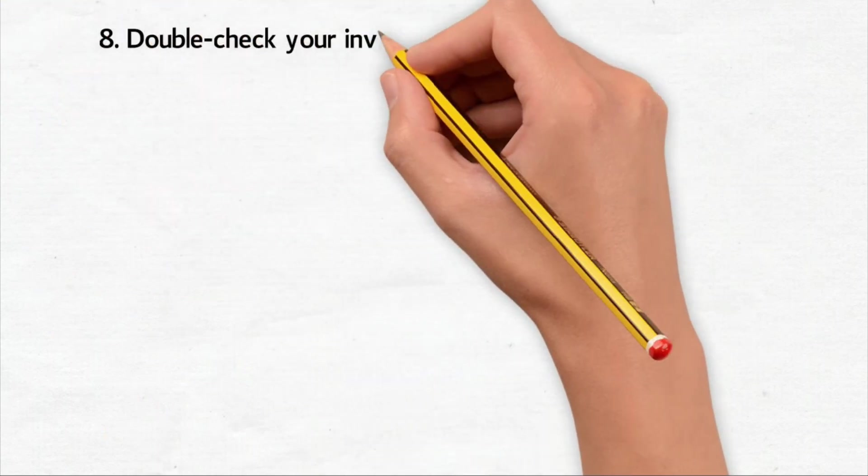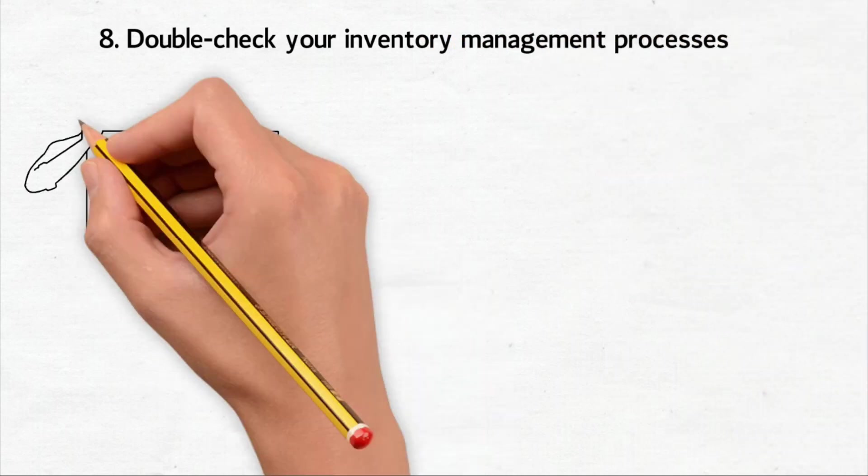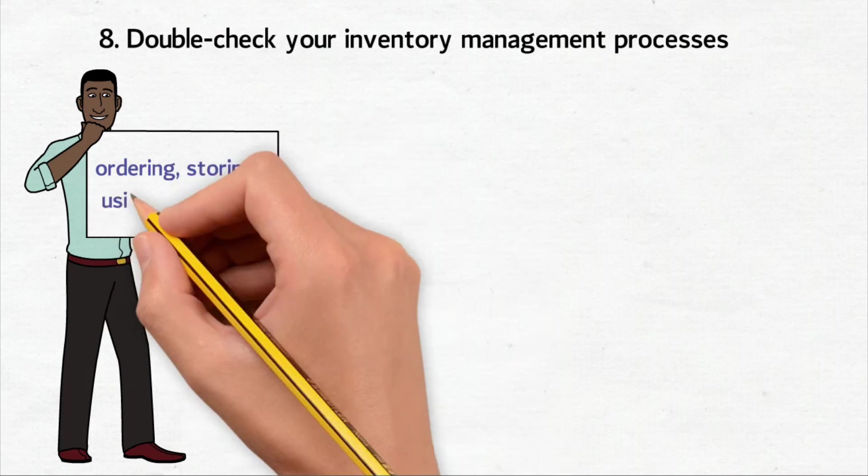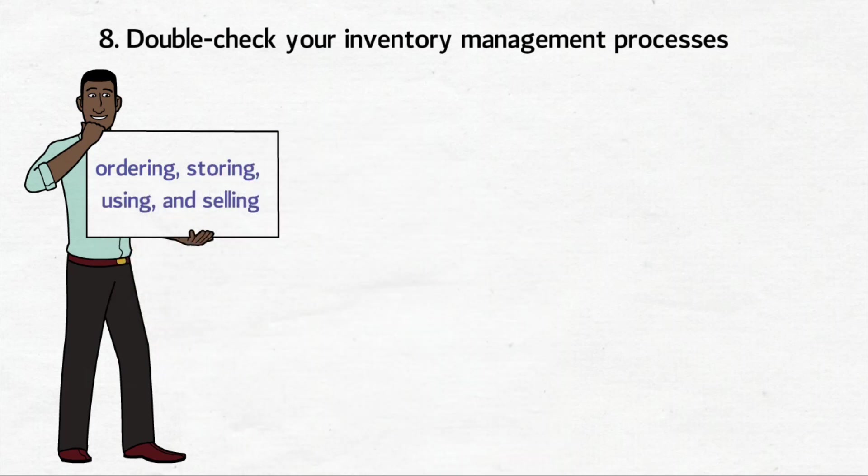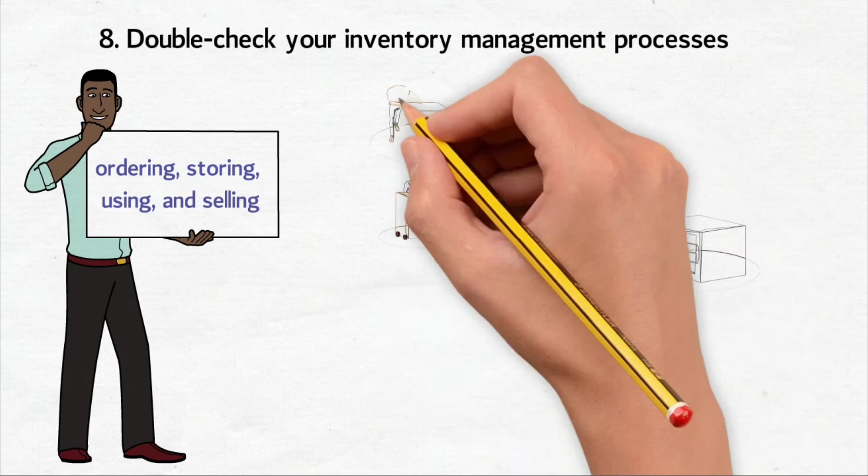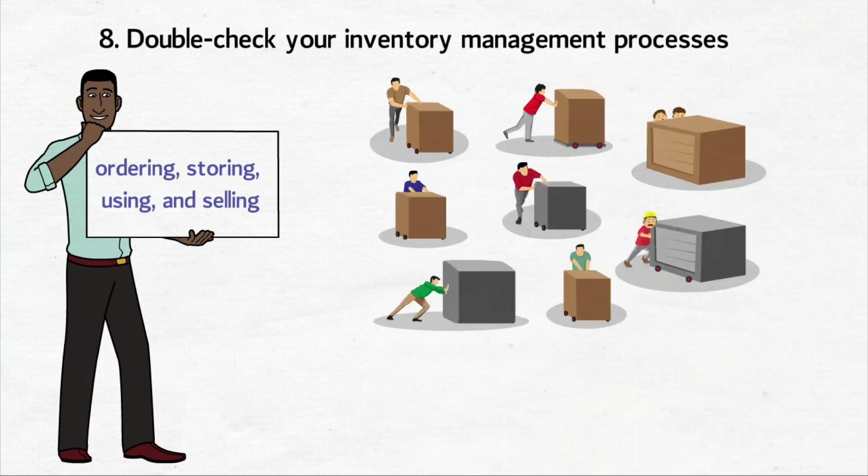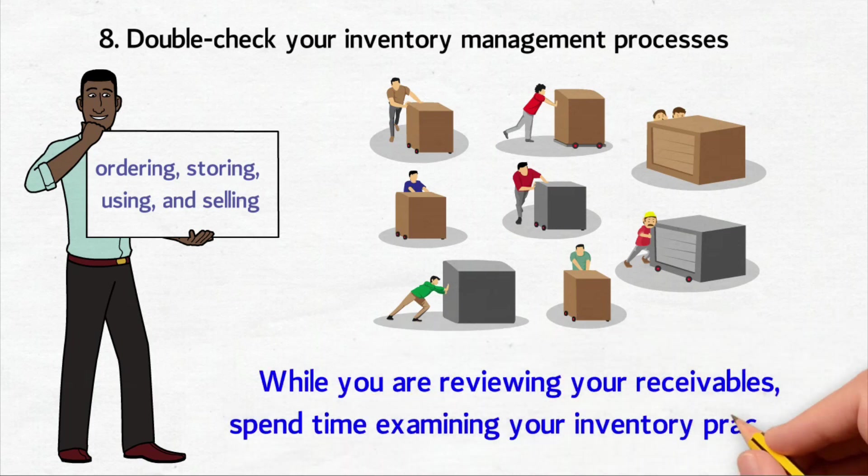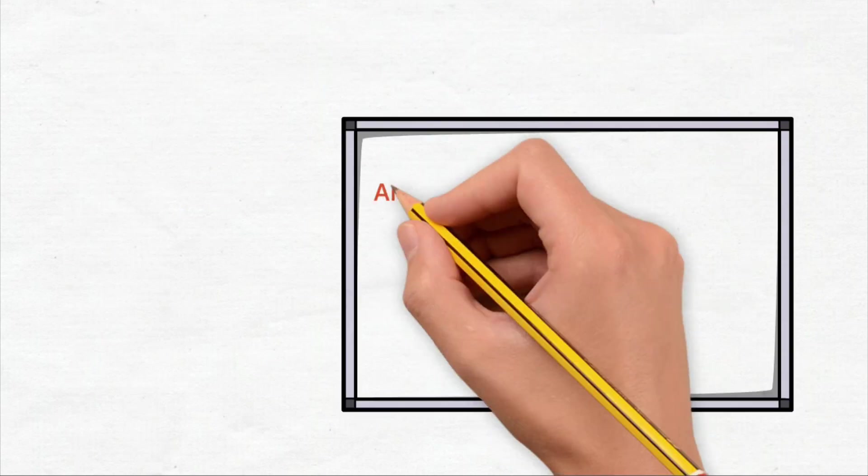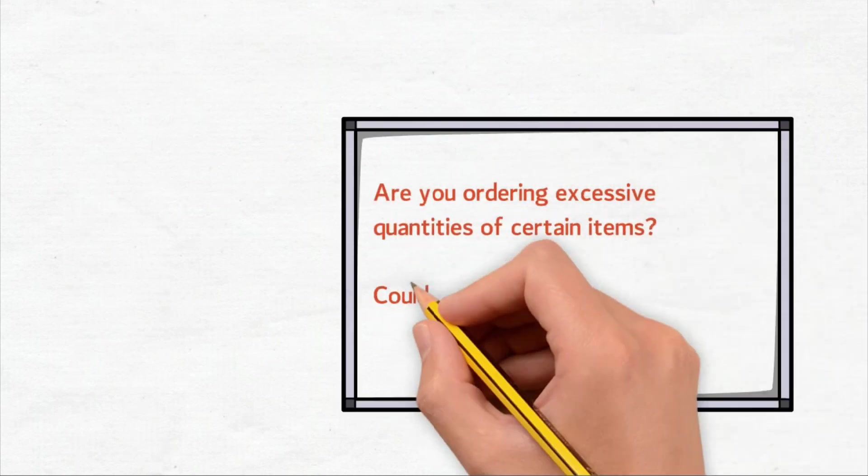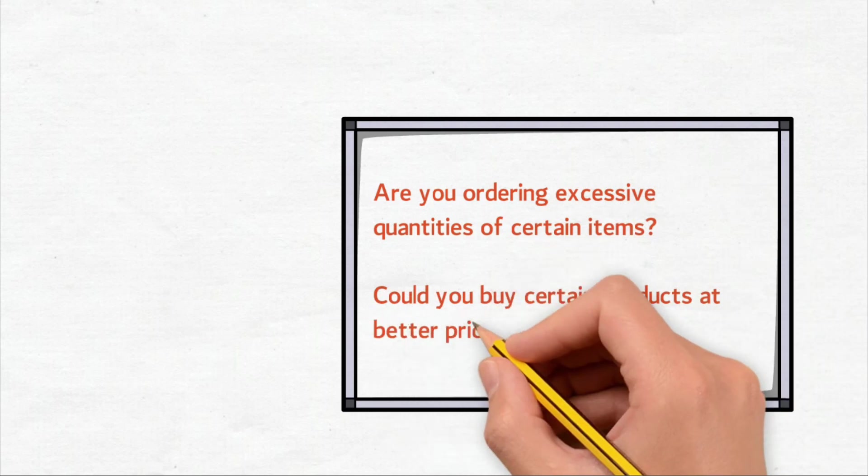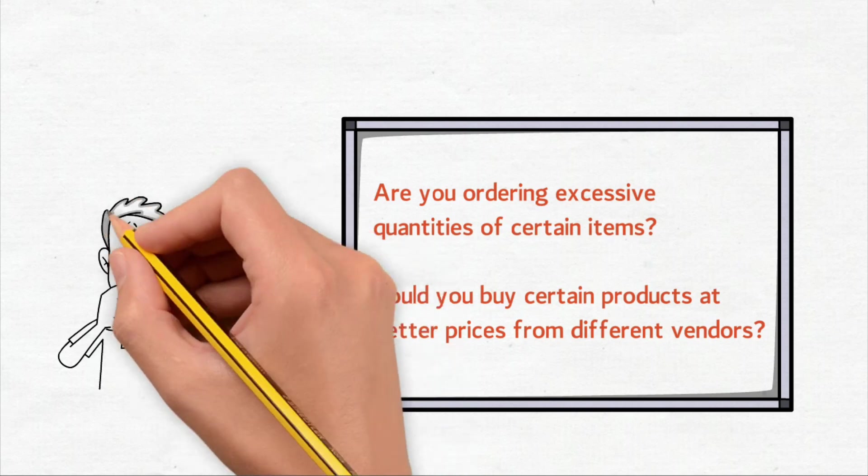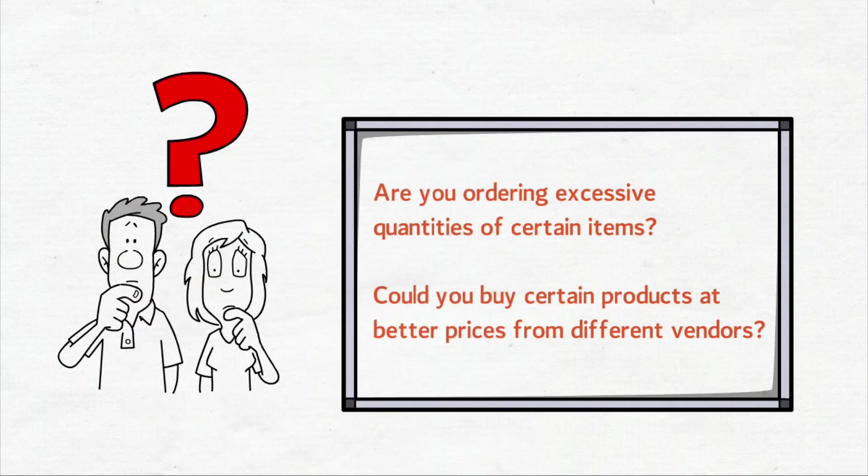Double-check your inventory management processes. Inventory management is simply talking about the process of ordering, storing, using and selling a company's list items at hand. Doing things the same way for years on end might seem convenient, but it is not necessarily cost-efficient. While you are reviewing your receivables, spend time examining your inventory practices. Are you ordering excessive quantities of certain items? Could you buy certain products at better prices from different vendors? There are many ways to cut costs, so do not get caught up by doing things one way because it's what you are used to.